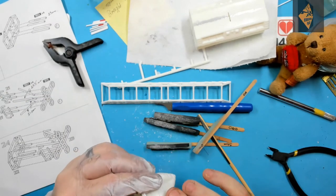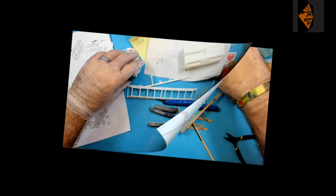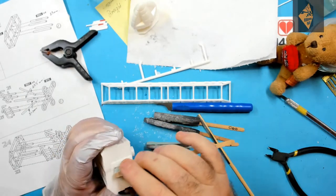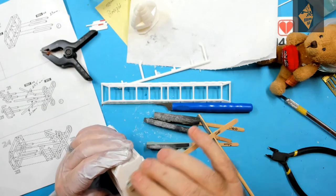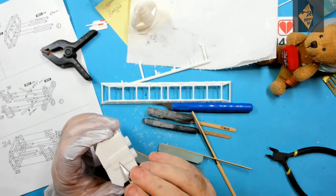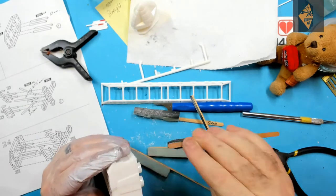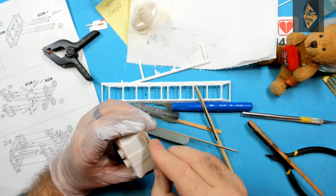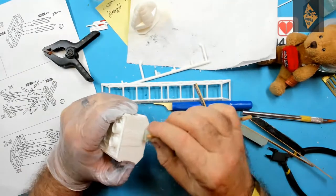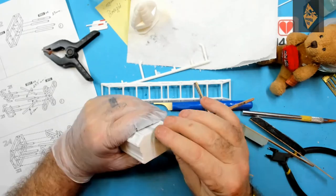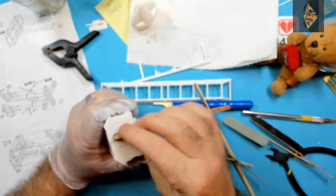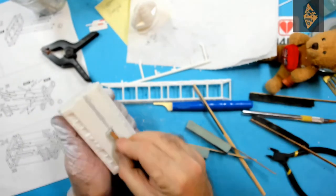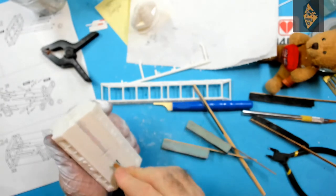A final check for seams and I'm calling the cockpit done and ready for priming. Now to crack on with the VIP pod. What I'm doing here is sanding, then running my finger over the seam to see if it catches. So sand and check, sand and check, sand and check.